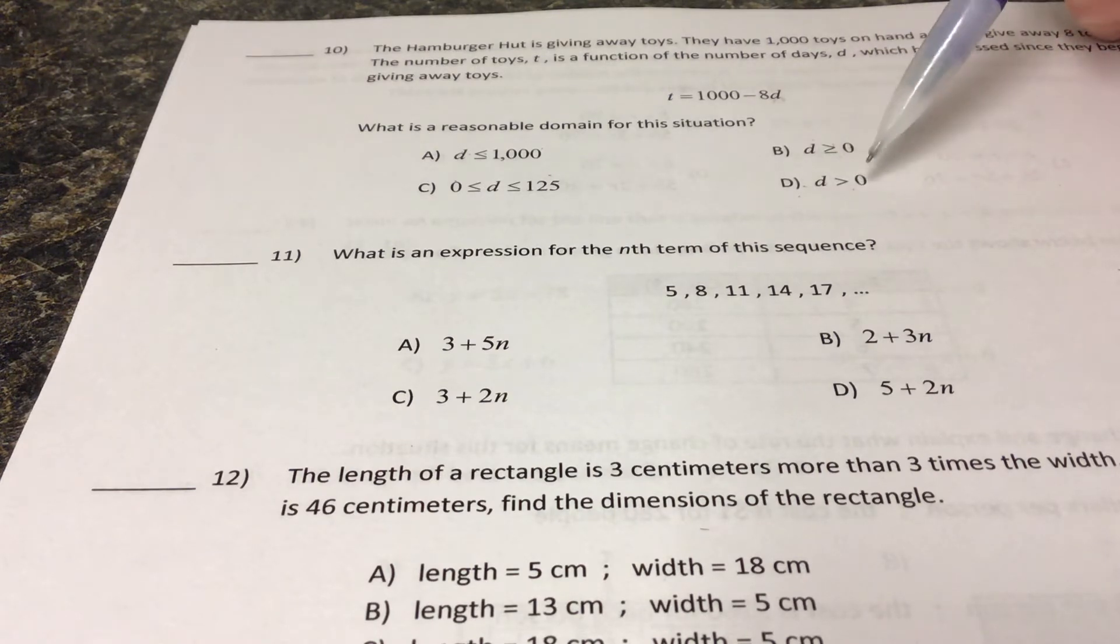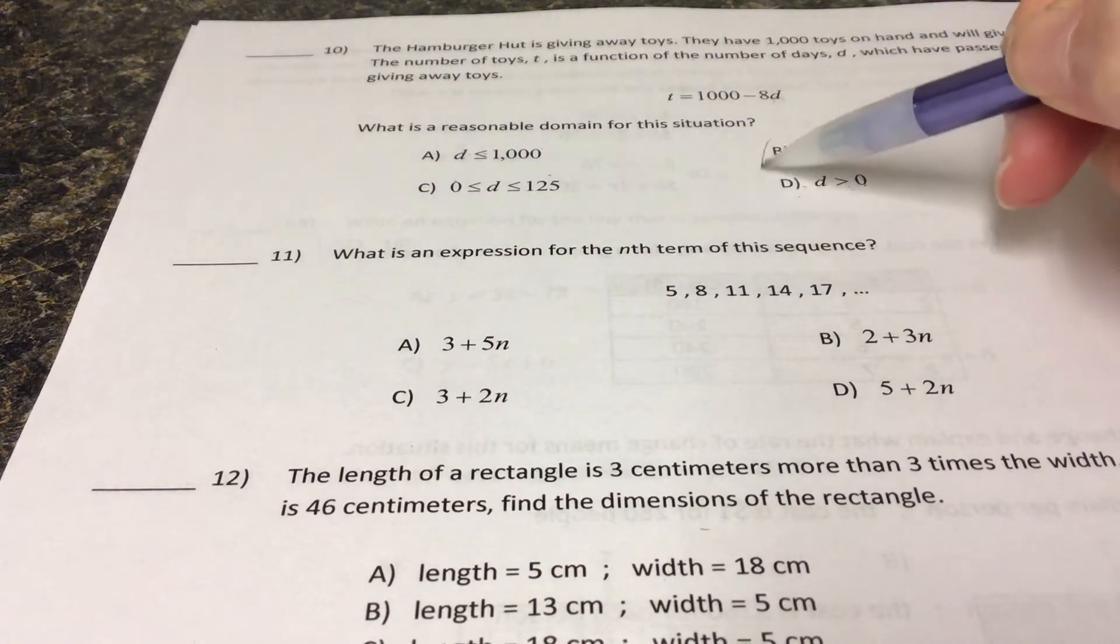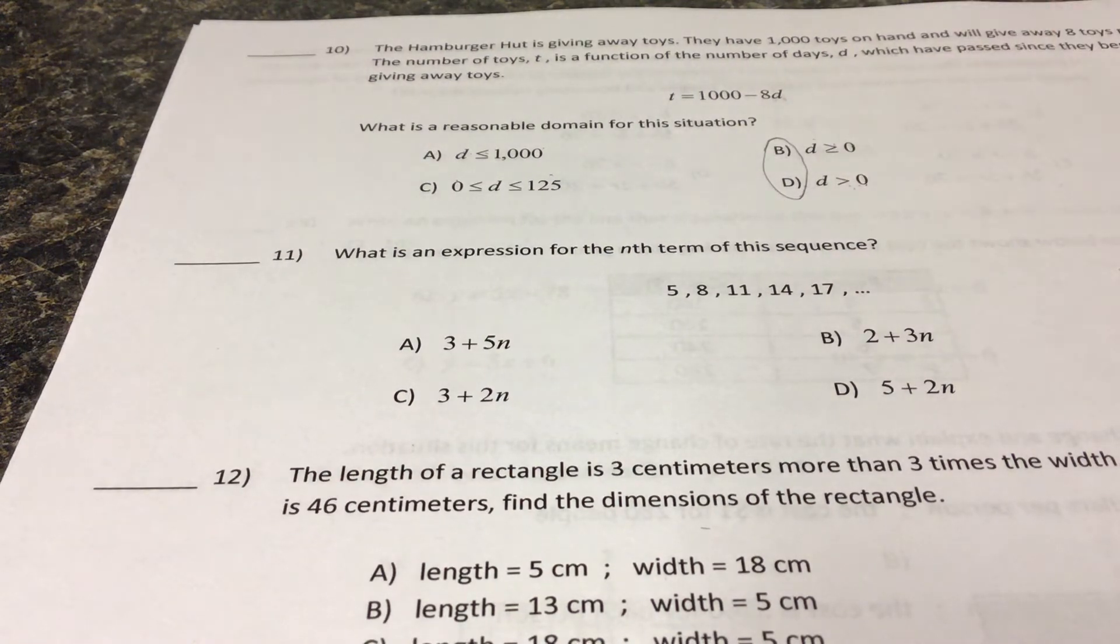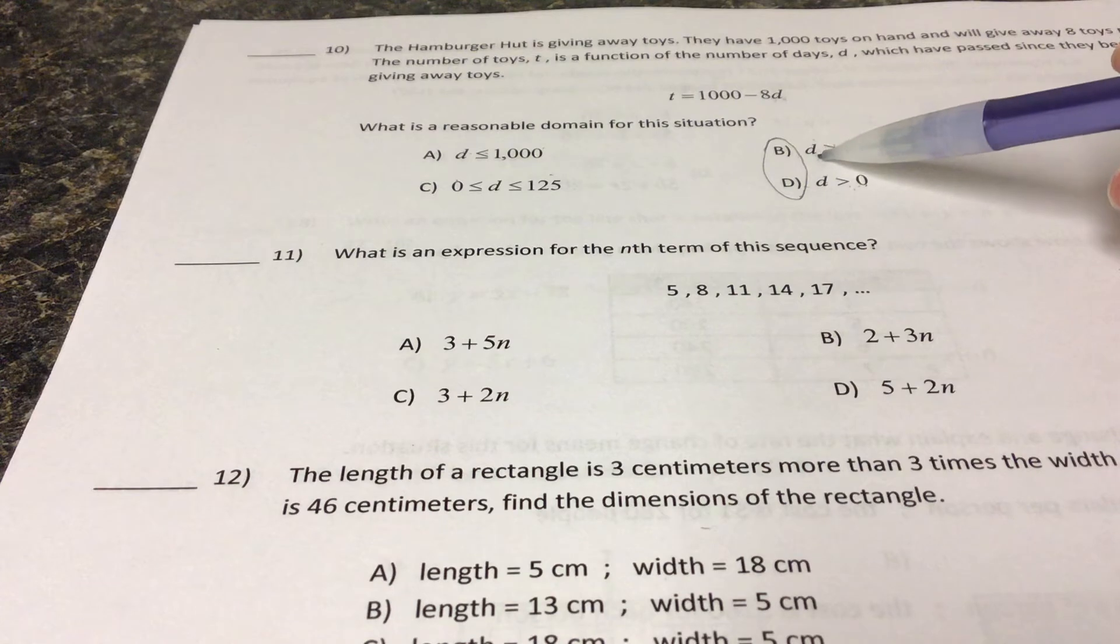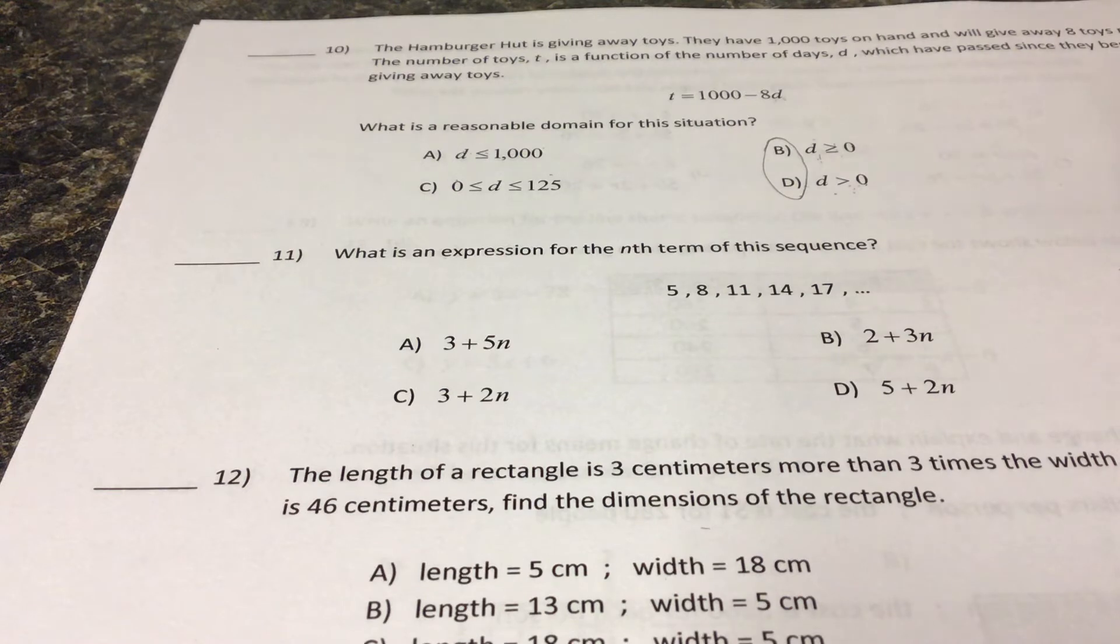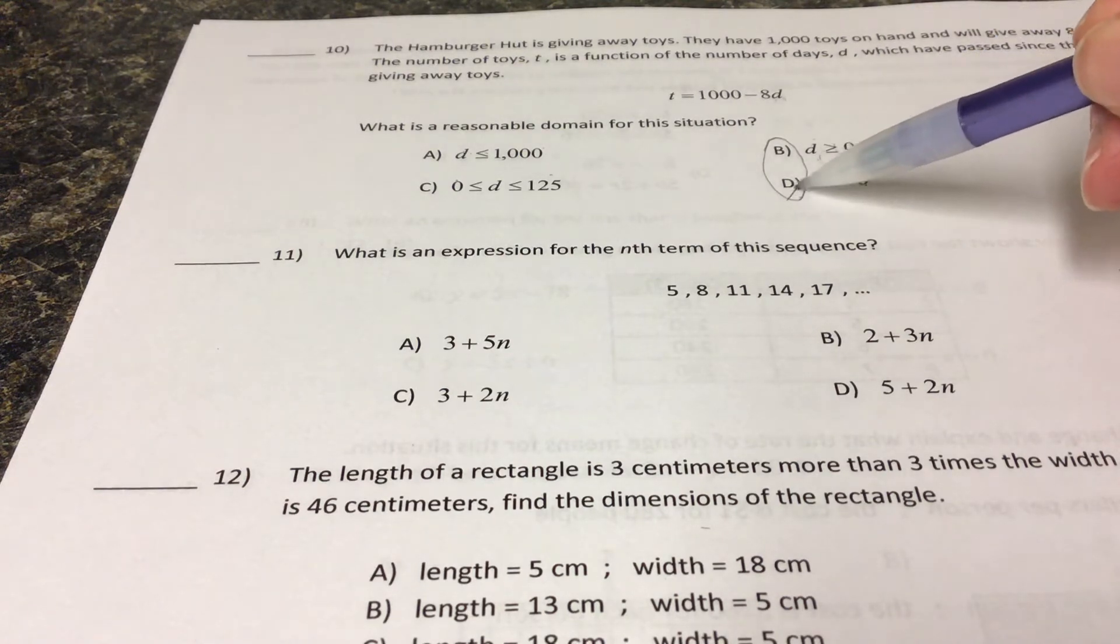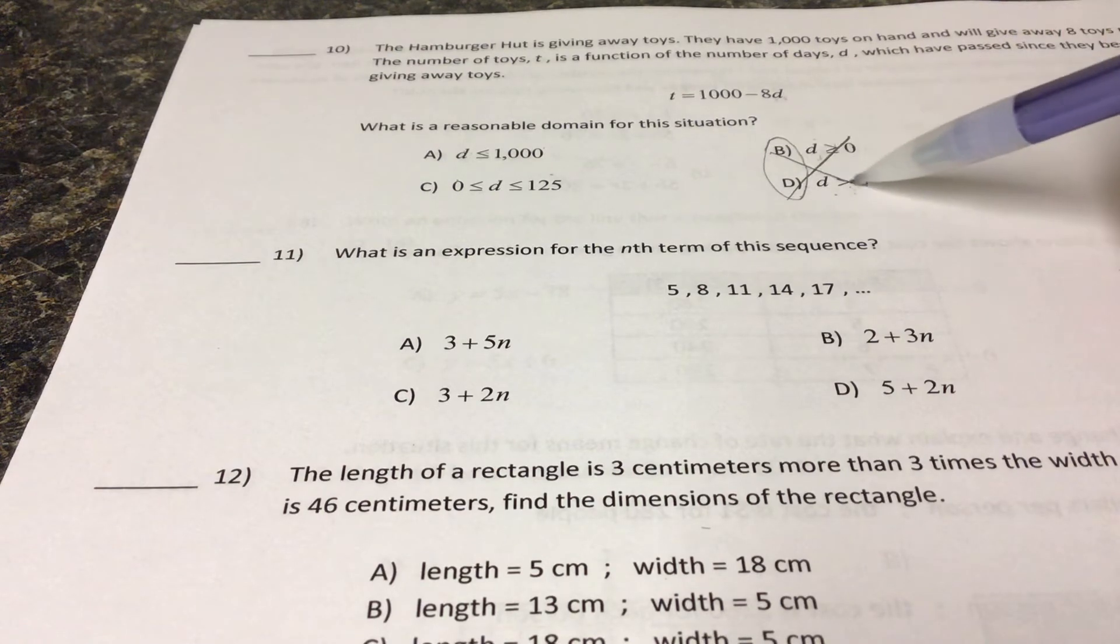And this one is saying that our number of days could be greater than or equal to zero. These two, I'm going to eliminate those as possible choices because what that is saying is that I can give toys away for a billion days. I can't give away toys for a billion days because I wouldn't have enough toys.